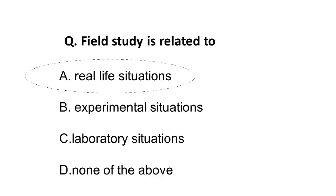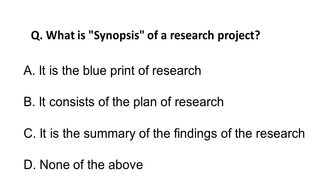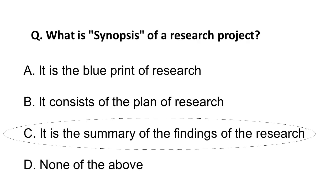The next question is: what is the synopsis of a research project? When you hear 'synopsis,' the word that should come to mind is 'abstract.' A synopsis is the abstract — the summary of what is done during the project. It is not a blueprint; the blueprint of research is the research methodology. Remember: synopsis, abstract, and summary are similar terms referring to the summary of the findings of the research.